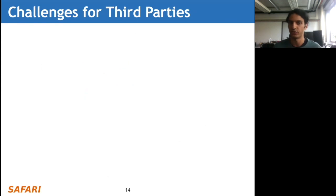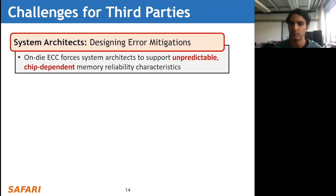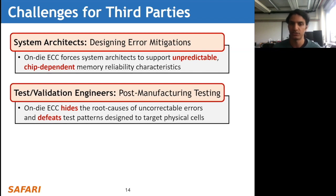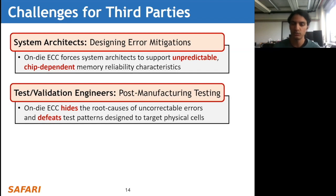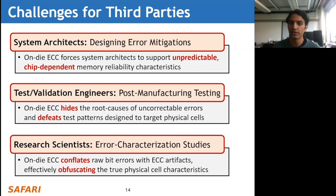This introduces significant challenges for third parties testing these DRAM chips. For system architects, on-die ECC forces them to support unpredictable chip-dependent memory reliability characteristics. For test and validation engineers, on-die ECC hides the root causes of uncorrectable errors, and defeats test patterns used to target physical cells because the ECC encoder obfuscates the data before it's written to the device. For research scientists, on-die ECC conflates the raw bit errors being studied with ECC artifacts, effectively obfuscating the true physical cell characteristics that are the target of the study.